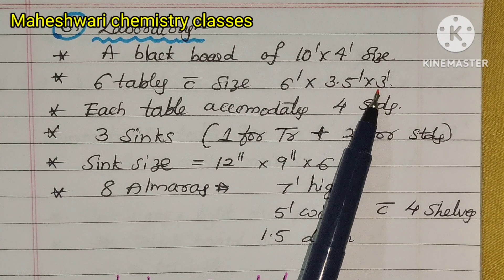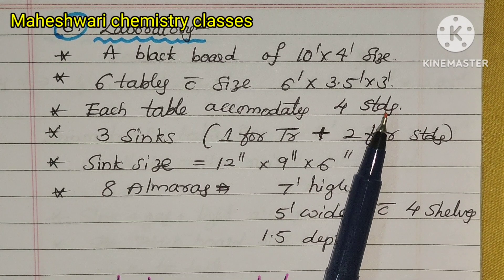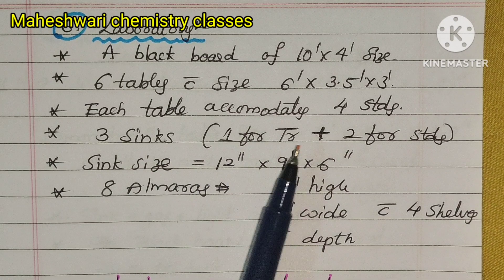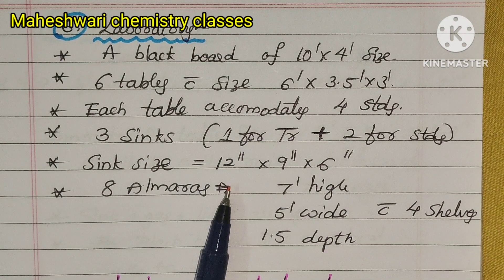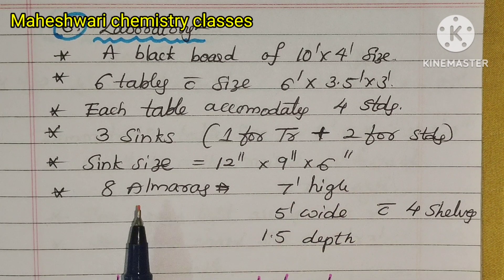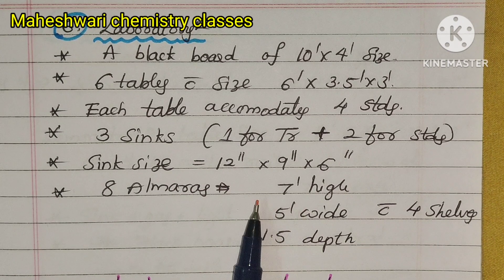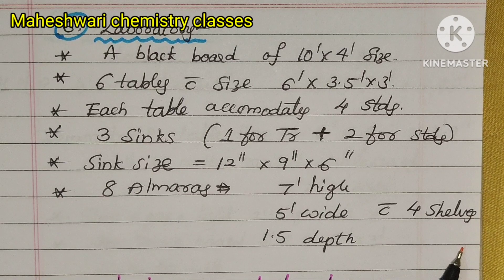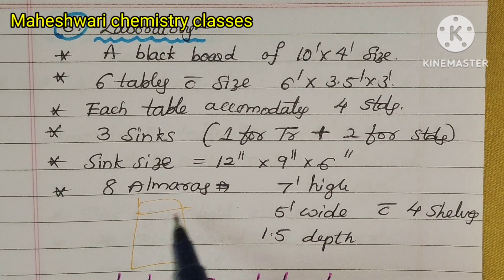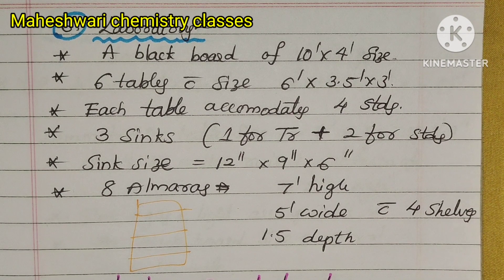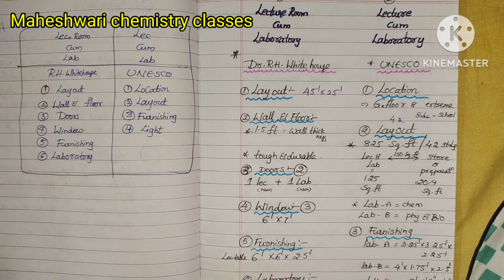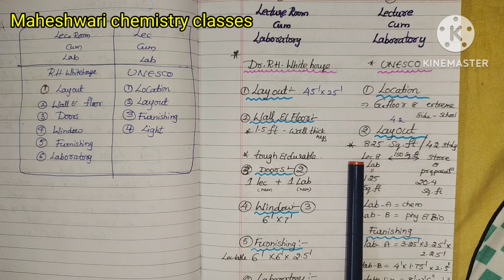Each table is 3.5 feet by 3 feet and accommodates 4 students. There are 3 sinks in the laboratory: 1 for the teacher and 2 for students. Sink size must be 12 inches by 9 inches by 6 inches. There are 8 almaras, 7 feet high, 5 feet wide, 1.5 feet depth, with 4 shelves each.